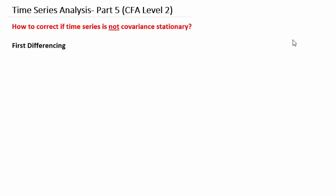Welcome to part 5 of time series analysis. We concluded the last video with the Dickey-Fuller test, a test conducted to determine whether a time series is covariance stationary or not. In this video we will see how we can correct the time series if it is not covariance stationary, and later we will see seasonality in an AR model. Let's begin with correcting for non-stationarity, or when a time series has a unit root.